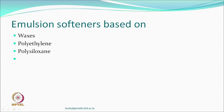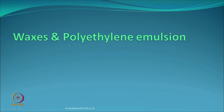The first set of compounds that we can think of are waxes. There is another important softener based on polyethylene, which is a commercially useful compound. The other category we will talk about will be polysiloxane-based compounds. So let us first talk about waxes and polyethylene emulsion.